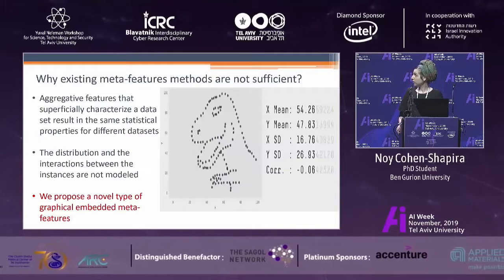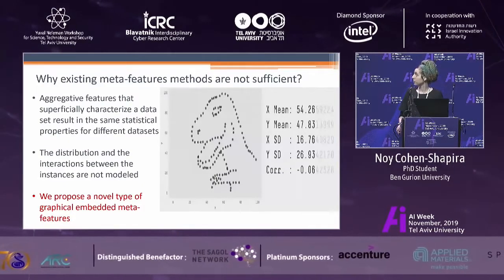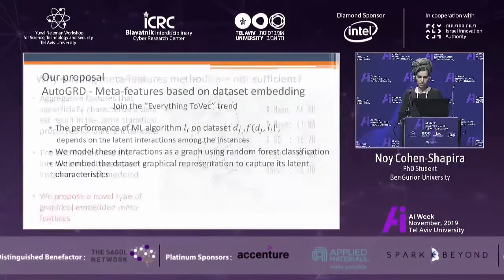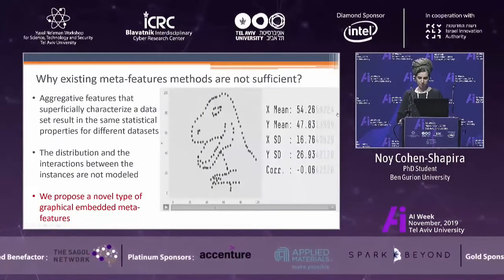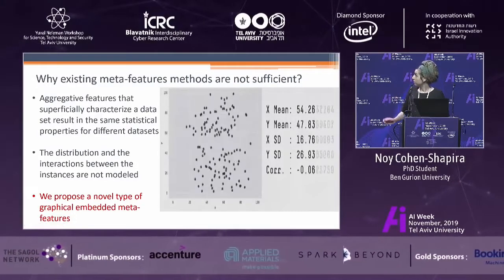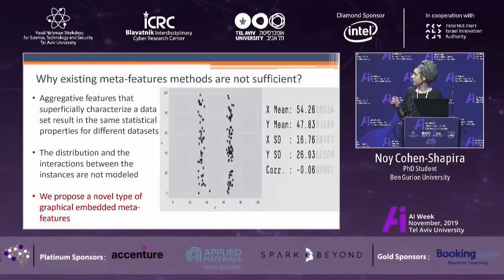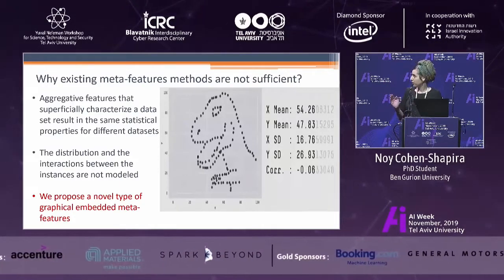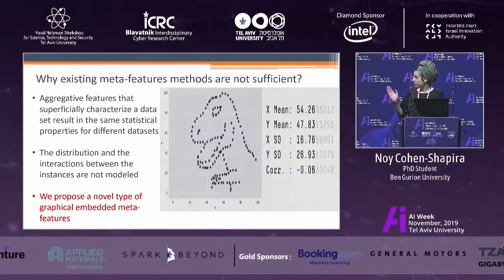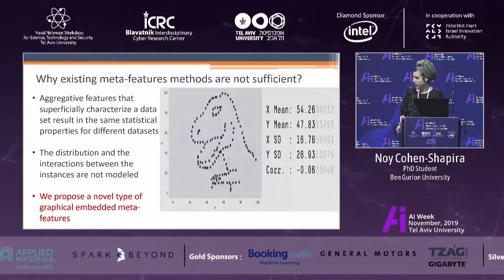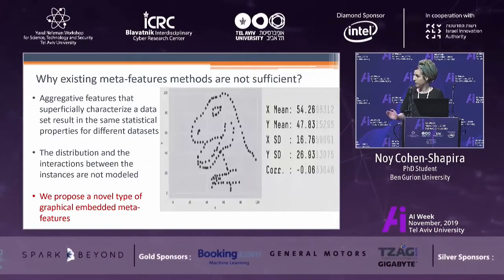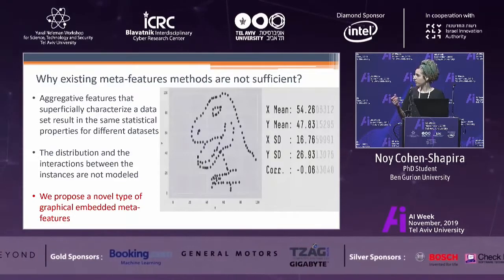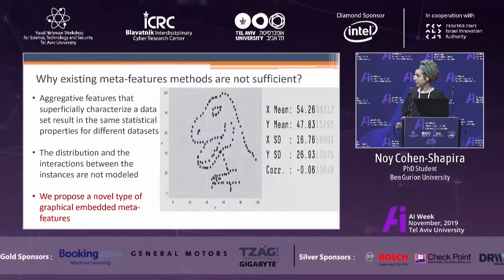I want to discuss why existing meta-feature methods are not sufficient. As you can see in this illustration, aggregative features such as mean and standard deviation result in the same statistical properties even when datasets have very different distributions and appear very different when graphed. This example demonstrates the importance of graphing the data before analyzing it, because these features don't discriminate the datasets. So we propose a novel type of graphical embedded meta-features that models the unique distribution and interactions between instances in a dataset.